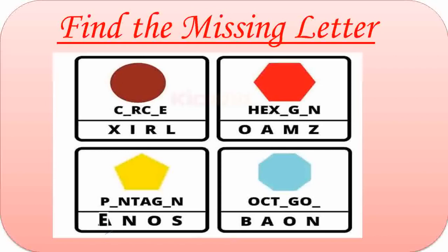Here are some shapes. First one is Circle. Missing letters are I and L. C-I-R-C-L-E. Circle. Second one is Hexagon. Missing letters are A and O. H-E-X-A-G-O-N. Hexagon. The third one is Pentagon. Missing letters are E and O. P-E-N-T-A-G-O-N. Pentagon. The fourth one is Octagon. Missing letters are A, O and N. O-C-T-A-G-O-N. Octagon.